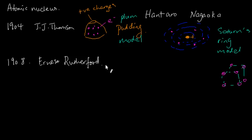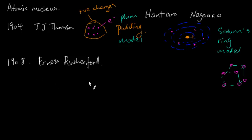In 1908, Ernest Rutherford did an experiment which demonstrated quite conclusively that Nagaoka's model — where positive charges are concentrated at the center — is likely to be the correct model. At that time, people already knew about radioactivity and alpha, beta, and gamma particles.